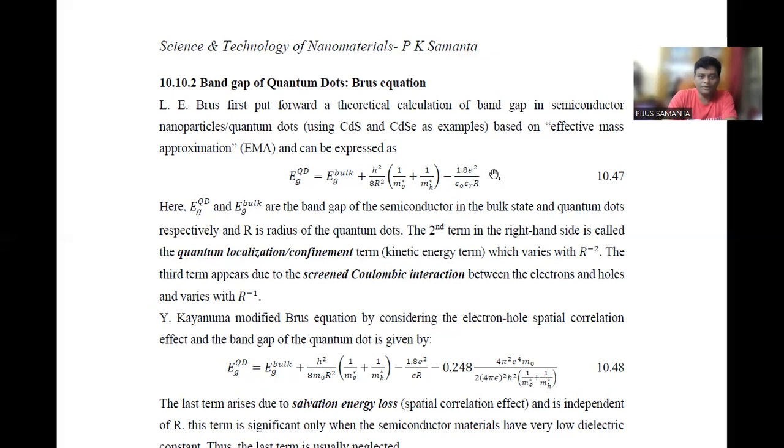The last term contributing to the band gap of quantum dot is the Coulomb screening interaction, or simply the Coulombic interaction, which is inversely proportional to R and has a negative contribution which tends to reduce the band gap.